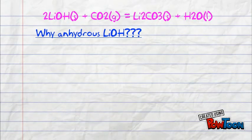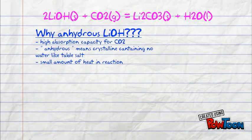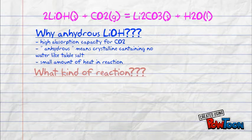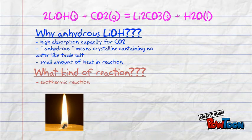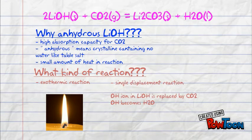Why use anhydrous lithium hydroxide? Well, first it has a high absorption rate for CO2. Second, anhydrous means crystalline, producing no water. And last but not least, it produces a small amount of heat so as not to affect the space shuttle. What kind of reaction is this? It is both an exothermic reaction like a burning flame and a single displacement reaction.